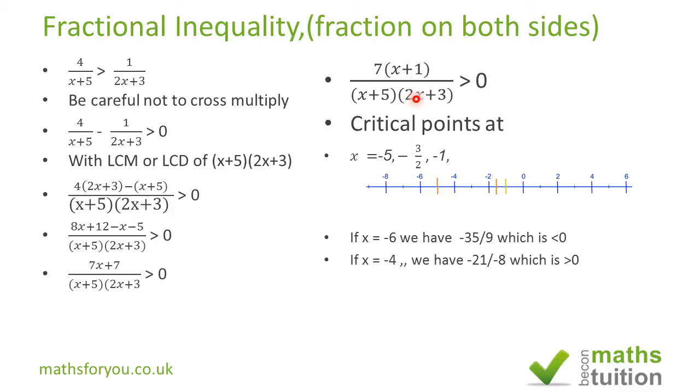If you try for instance 2 times minus 3 over 2, you get 0. There are 0 times (x+5) will give you 0. So you have a 0 denominator and that's not definable. So that's what we got there.